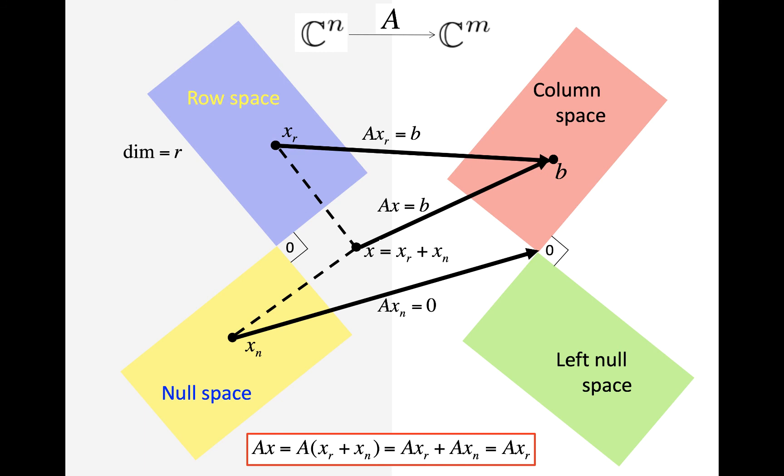Now, if the dimension of the row space is r, then the dimension of the column space is r, the dimension of the null space is n minus r, and the dimension of the left null space is m minus r.